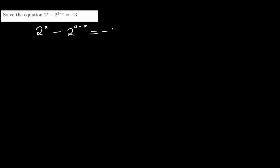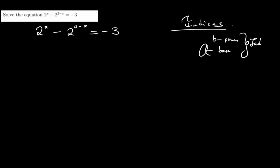The question says: solve the equation, which is 2 to the x minus 2 to the power (2 minus x), and this is equal to negative 3. Now I want you to remember something — back in the day you learnt indices. Indices give you a shortcut for how many times you can repeatedly multiply the base by itself. If I have a raised to b, then a is the base and b is the power. This notation is called index notation.